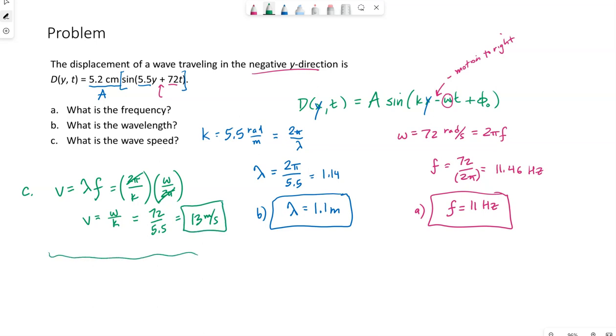Now side note, if I take my wavelength of 1.1 times my frequency of 11 hertz, I only get 12. Keep in mind when we are making calculations, you actually want to use a less rounded number. So the wavelength, for example, if I do 1.14, and then the frequency 11.46, then I do get my 13 this way. So rounding errors, keep in mind to use less rounded numbers in intermediate steps. I would use these intermediate values if I was calculating the speed from wavelength and frequency.